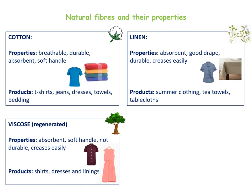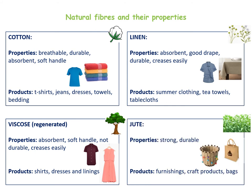Viscose is a regenerated fabric, meaning it comes from part wood pulp. The properties are absorbent and soft to handle, but it is not very durable and can crease easily. It has been used a lot recently for shirts, dresses and t-shirts. Jute is a strong and durable fabric; however it doesn't have many products it can be made into. If you look at the pictures, it is mainly used for craft products, bags and furnishings.